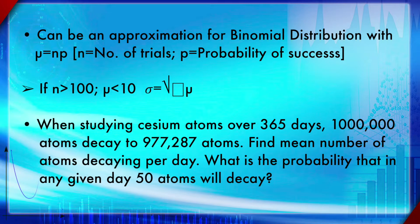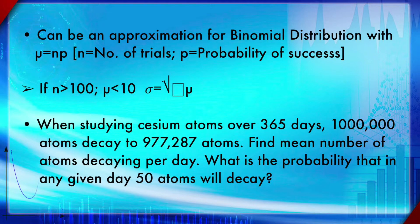One example: when studying atoms over 365 days, 100,000 atoms decay to 977,287 atoms. Find the mean number of atoms decaying per day, and what is the probability that on any given day exactly 50 atoms will decay? For the first part, simply divide the total decay count by 365 to get per-day rate. For the second part, plug that mean number per day into the Poisson equation to solve. Let us discuss your answers in the discussion groups.